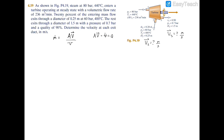Let's start at the inlet. At the inlet, you're given the volumetric flow rate, the pressure, and the temperature, so we can find the specific volume. We'll turn to 80 bar on the properties table.